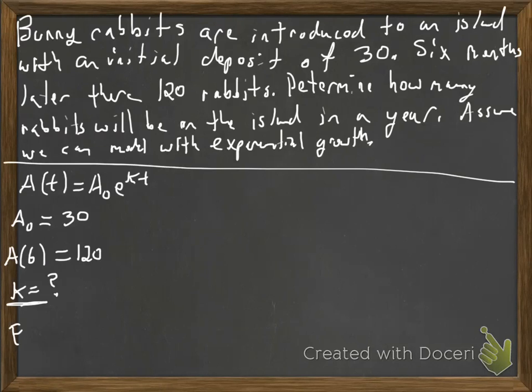So it's one of those problems where we're trying to find the interest rate, but here it's called the growth rate. So we're going to find the k. And I do have enough information here to do that. We're going to use the fact that there's 120 bunny rabbits at six months. So 120 is equal to 30e^(k), and then that's in six months.